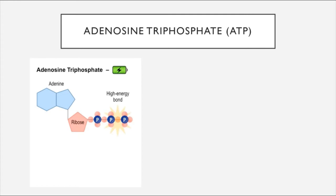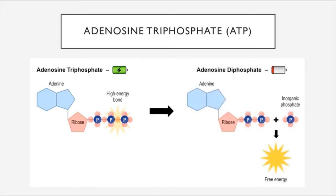Think about how much energy it takes to hold those two magnets close to each other when they're repelling. It's a lot of energy. In ATP, these high-energy chemical bonds hold the phosphate groups fixed in position—and that is where this massive amount of energy is stored. When the cell wants to access that energy, all it has to do is break that bond that is already primed to break because of the repulsion, releasing all of the energy that was being used to hold them together.